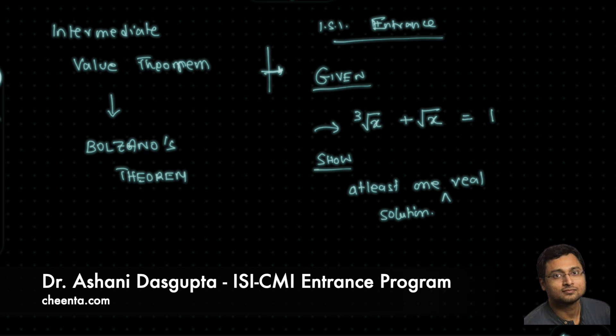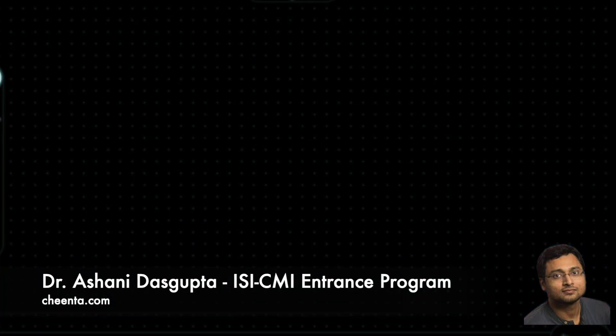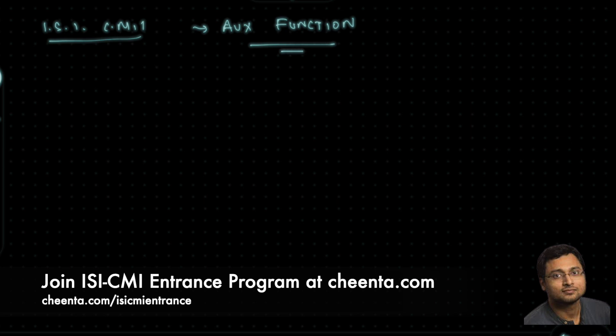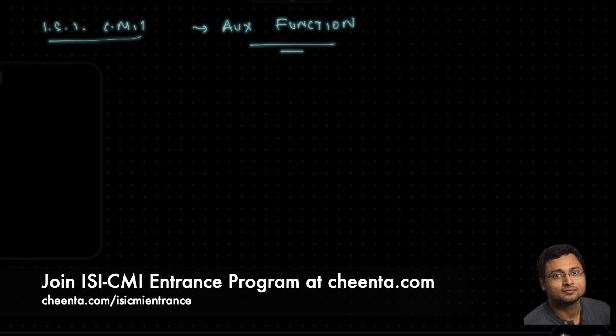In fact, we want more. We want to show there is at least one positive real number x that is a solution. So how do we go about it? In a previous video and also in our ISI and CMI entrance programs, we talk about something called Auxiliary Functions. We have used it numerous times.